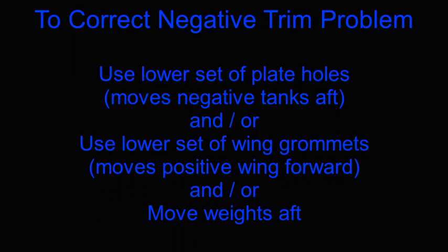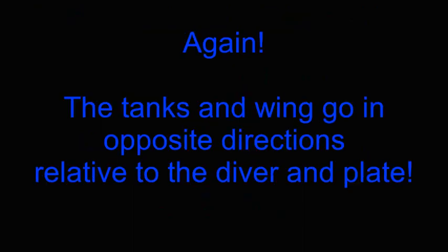To correct a negative trim problem, we can use a lower set of plate holes, which has the effect of moving the negative tanks aft. We can also use a lower set of wing grommets, which results in moving the positive wing forward, or we could also move some weights aft. Once again, the tanks and wing go in opposite directions relative to the diver and the plate.